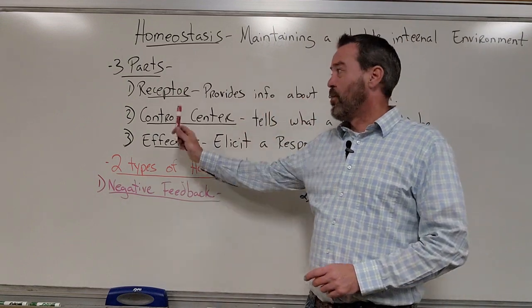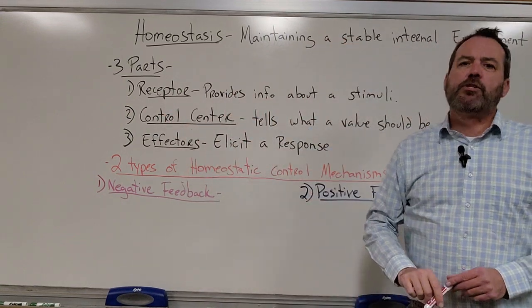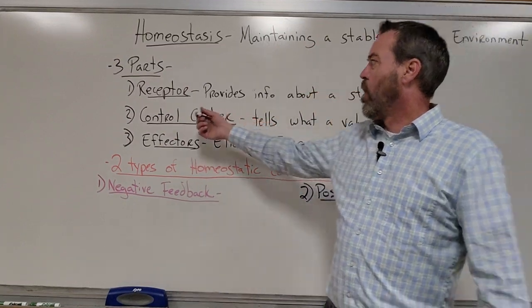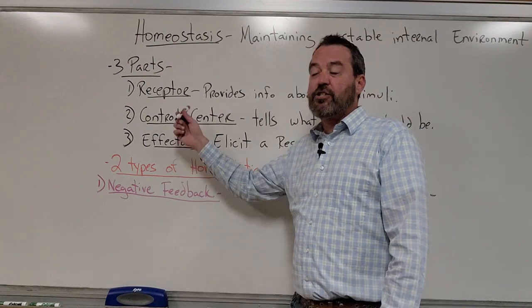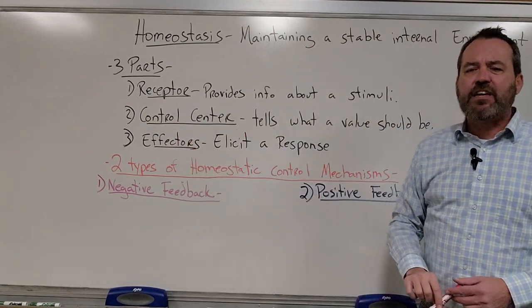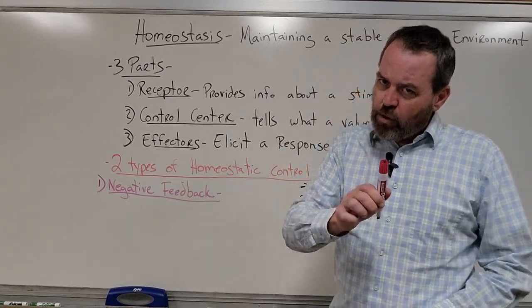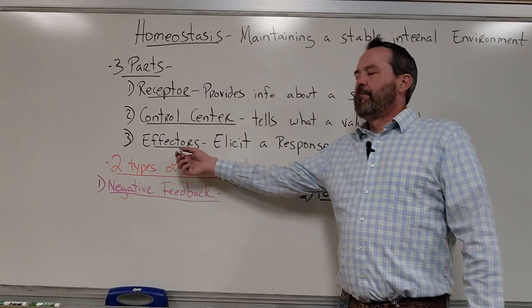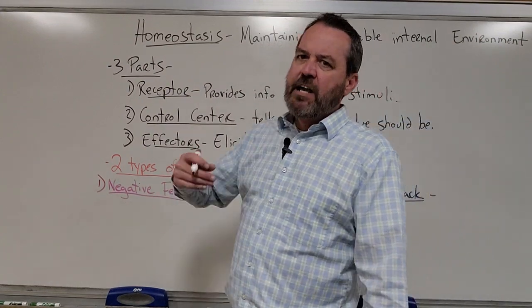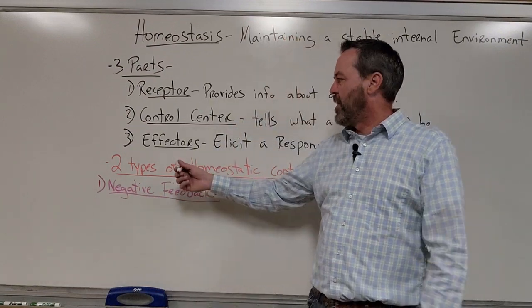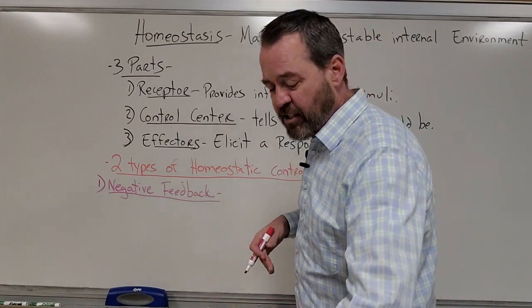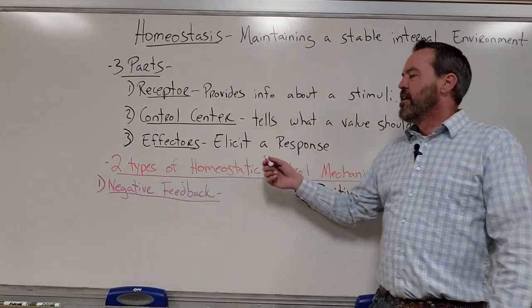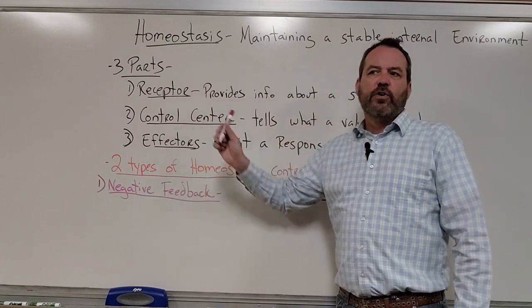We have three parts with homeostasis. First, a receptor, which provides information about a stimulus — we pick up information from our environment and take it to our nervous system. Then we compare that information with what we have in the control center, also called the set point, which tells what a value should be. Then we elicit an effector — we call them effectors because they have an effect; they actually do something to make a change. Like muscles are effectors: you touch a hot stove, you pull that hand away — that's your effector. Its job is to elicit a response that changes whatever's wrong with our homeostasis.